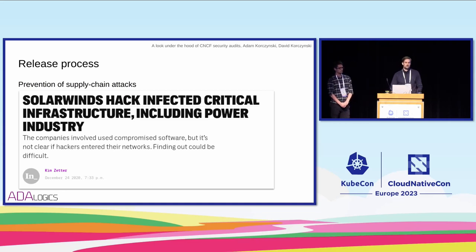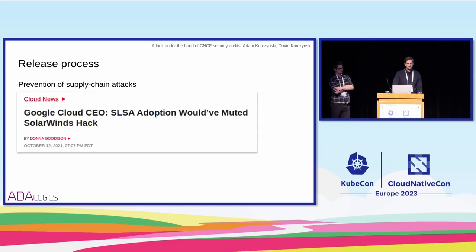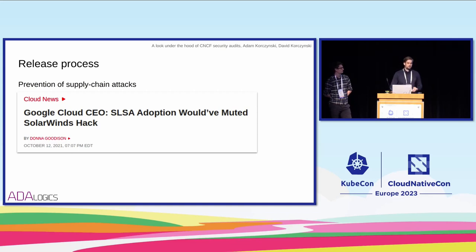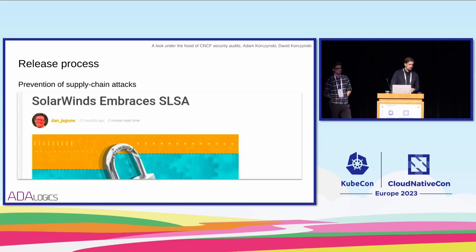As David mentioned, SLSA — we can start with the problem that there was the SolarWinds issue in 2020. In response to that, open source efforts were put in place to create the SLSA framework, which aims to counter the threats that were visible in the SolarWinds attack. Some actors claimed that SLSA would have countered the SolarWinds attack. SolarWinds also adopted the SLSA framework in their own release pipeline. We want to ensure the same for the CNCF projects — that they have standards like this in their own release processes.